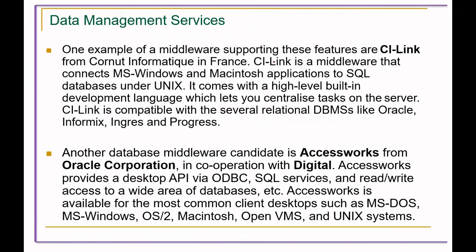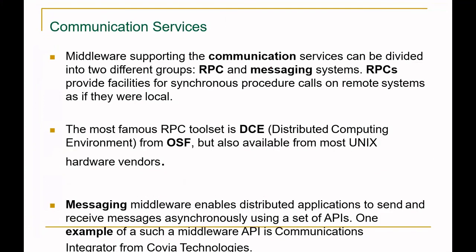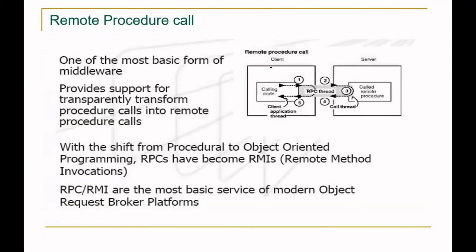An example of data management middleware is CI Link from Cornet Informatics in France, which connects MS Windows and other platform applications. Another candidate is Access Works from Oracle Corporation. For communication services, middleware can be divided into two categories: RPC and messaging systems. The most basic form of RPC provides support to transform local procedure calls into remote procedure calls.